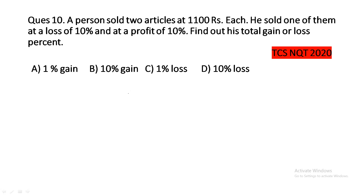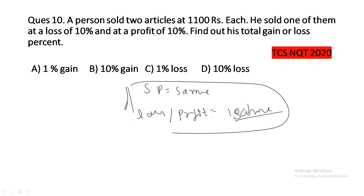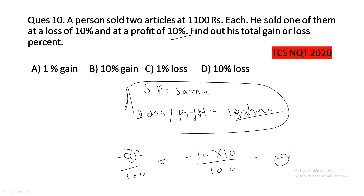Next question: a person sold two articles at 1100 rupees each. He sold one at a loss of 10 percent and the other at a profit of 10 percent. Since the selling price is the same and the loss and profit percentages are equal, we use the formula: net result = minus x² upon 100, where x = 10. So minus 10×10 upon 100 = minus 1. There is a net loss of 1 percent.